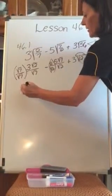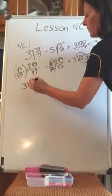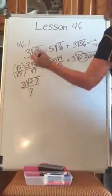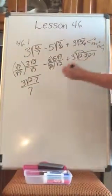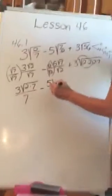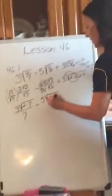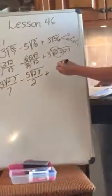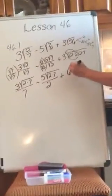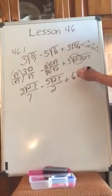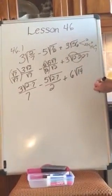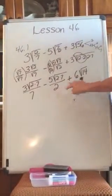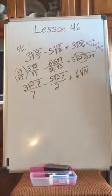So now I have 3 times the square root of 14 over 7, because the square root of 7 times the square root of 7 is 7. Then minus 5 times the square root of 14 over 2. I'm going to pull my 2 out and multiply by 3, giving 6 times the square root of 14. Now I need a common denominator, which is going to be 14 — that's 7 times 2.